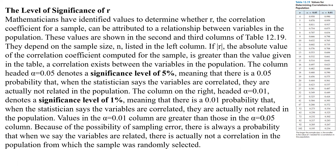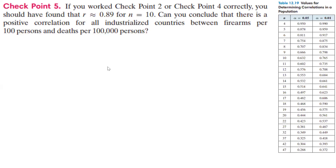Because of the possibility of sampling error, there's always a probability that when we say the variables are related, there's actually not a correlation in the population from which the sample is randomly selected. You're never going to be completely certain — you can get it to the 0.01 level or the 0.05 level and say you're good to that level. That's how we look at this.